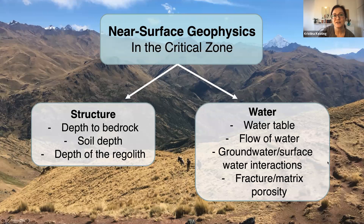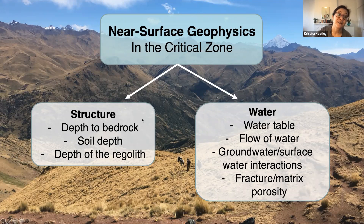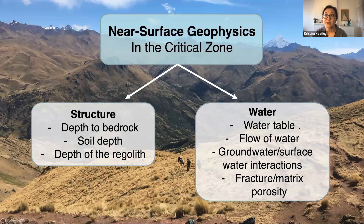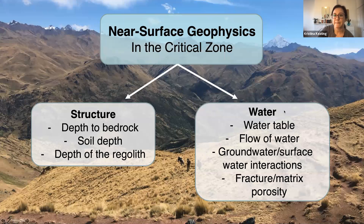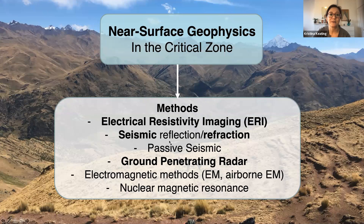Near-surface geophysics is used a lot in the critical zone to obtain information about its structure — things like depth of bedrock, soil depth, and depth of regolith. It's also used to attain information about water in the critical zone, including the water table, flow of water, groundwater-surface water interactions, and fracture and matrix porosity. Methods used include electrical resistivity, seismic reflection and refraction, passive seismic, ground penetrating radar, electromagnetic methods including EM and airborne EM, as well as NMR. For this particular project, we teach students about electrical resistivity, seismic refraction, and ground penetrating radar.